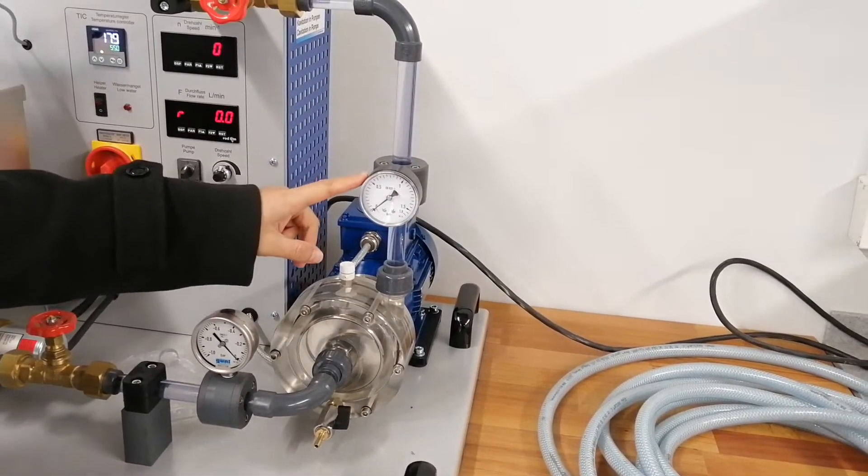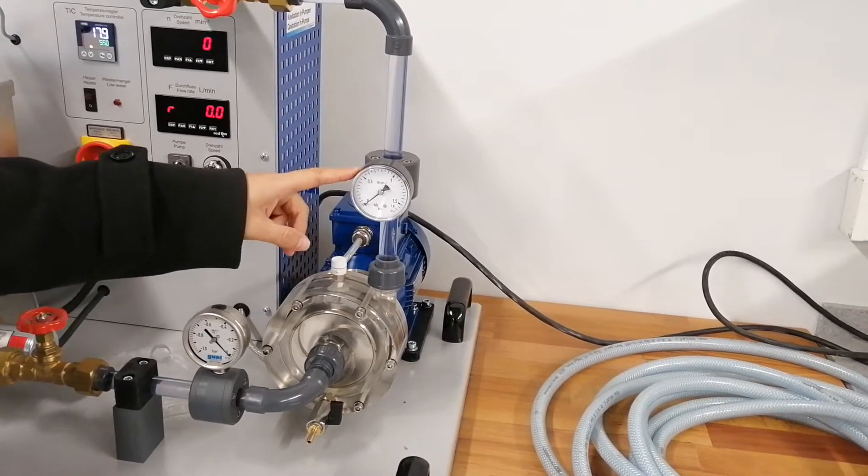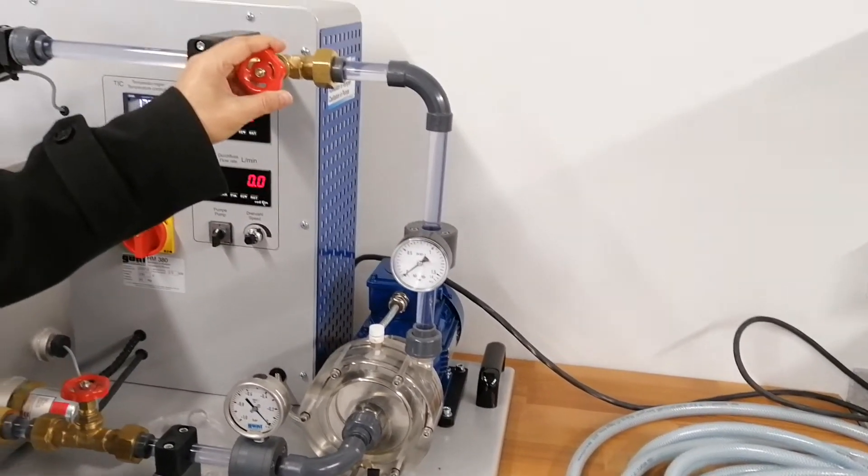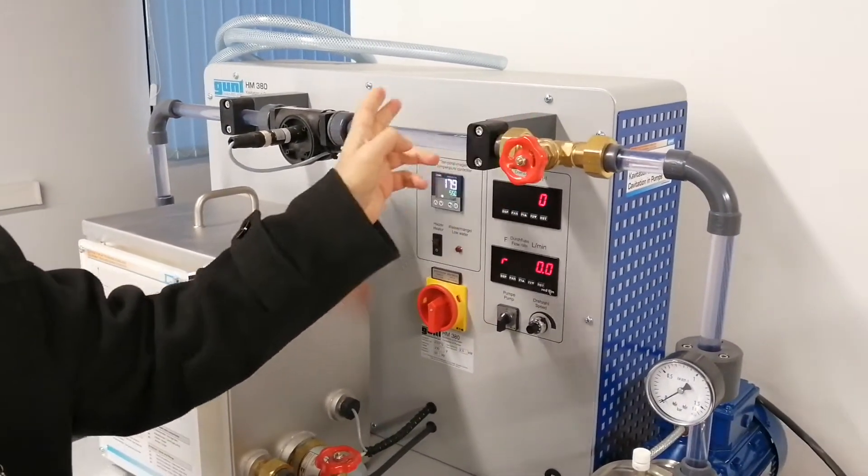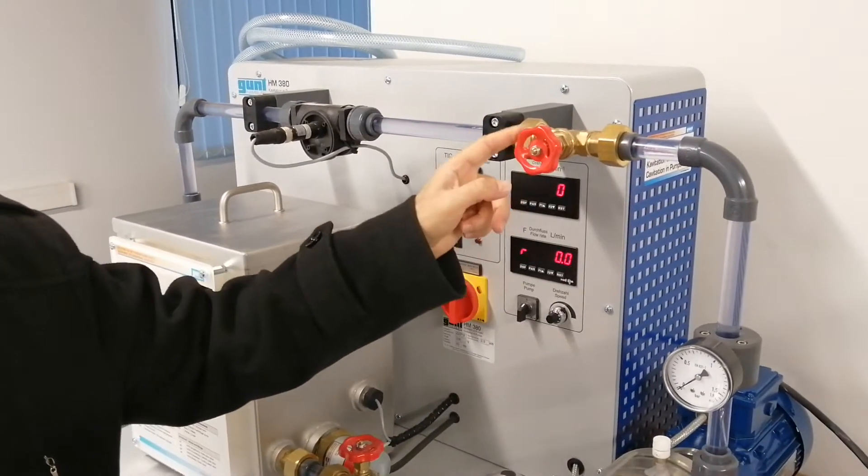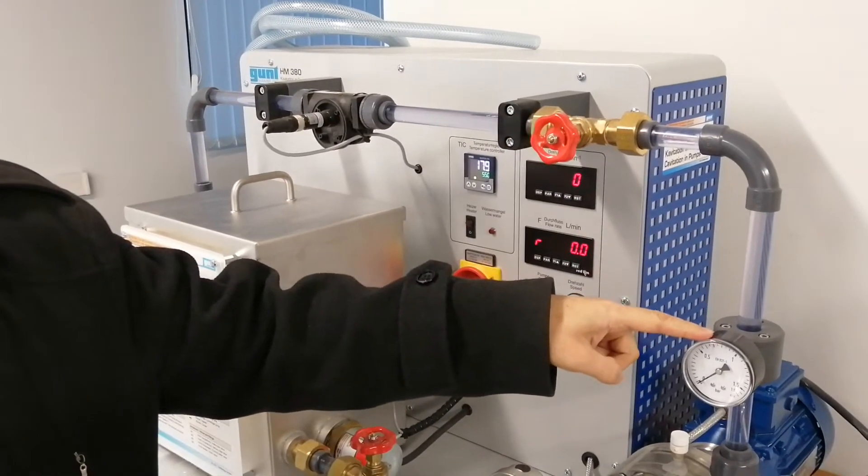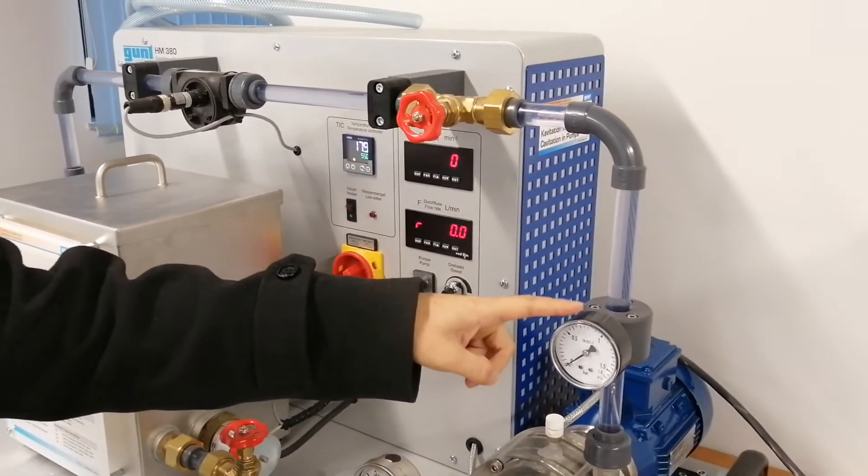And there is a manometer here. This is for delivery pressure, measuring delivery pressure. And this is a valve for adjusting the delivery flow rate. When we close this, you can see the pump head from this manometer.